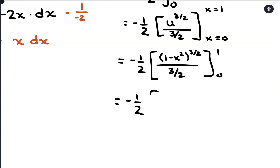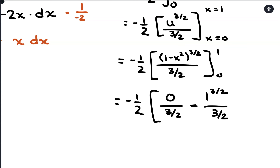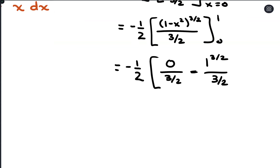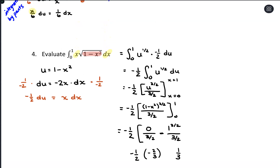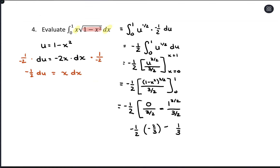Plugging in x equals 1: 1 minus 1 is 0, so 0 to the 3/2 is just 0. Plugging in x equals 0: 1 minus 0 is 1, so 1 to the 3/2 is 1. So we have 0 minus 2/3, giving negative 1/2 times negative 2/3, which equals positive 1/3. You could also just leave the expression and throw it into the calculator, and you'd get the same result. So that's substitution method with definite integrals — you should be ending up with just a number at the end because it's an area under the curve.